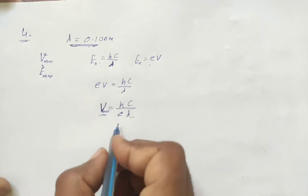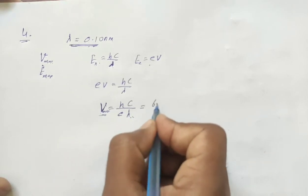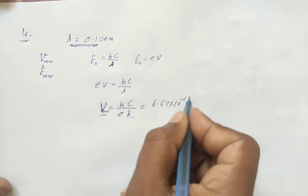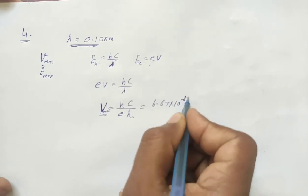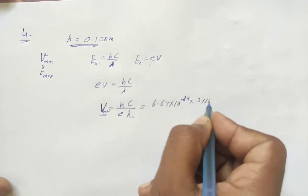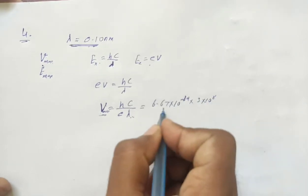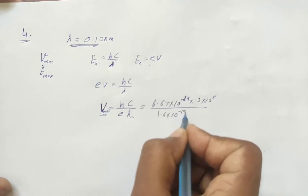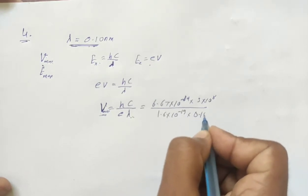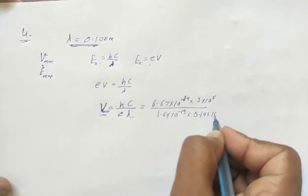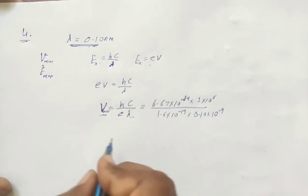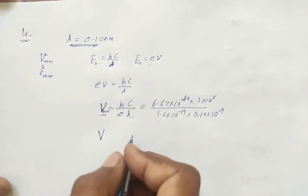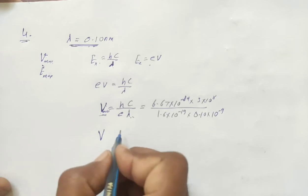Now substituting the values: h = 6.67 × 10⁻³⁴, c = 3 × 10⁸, e = 1.6 × 10⁻¹⁹, and λ = 0.10 nanometer = 0.10 × 10⁻⁹ meters. We will now solve for the potential.